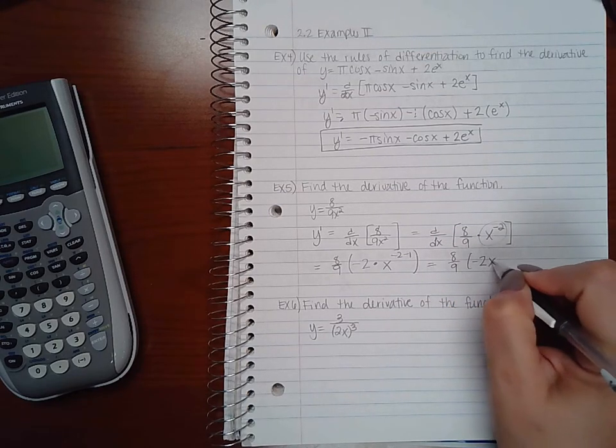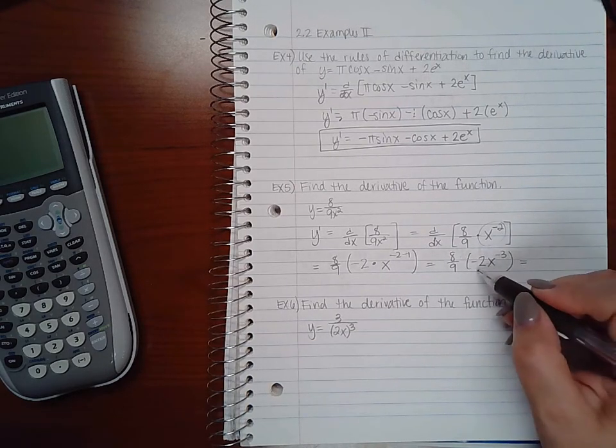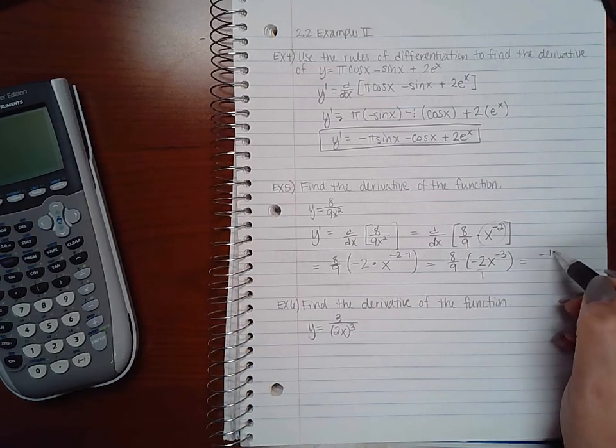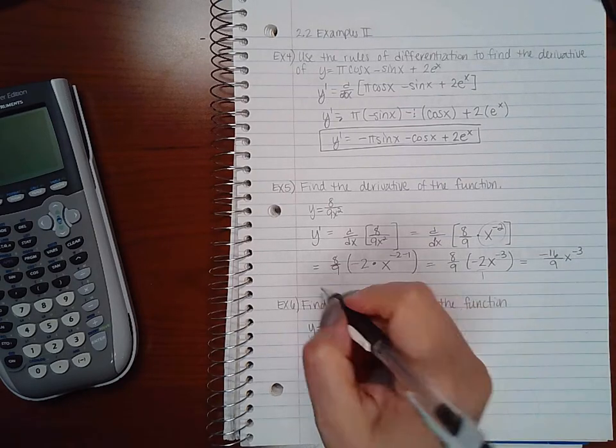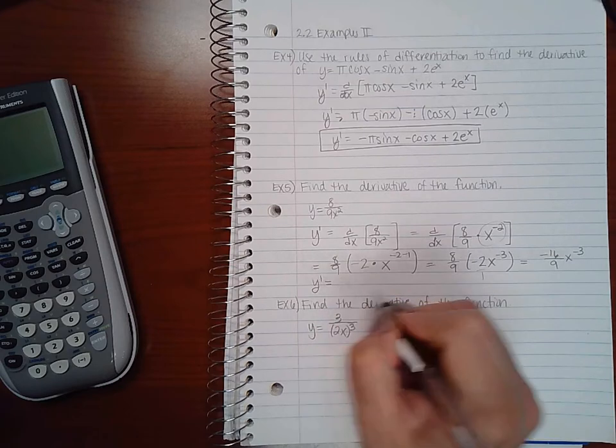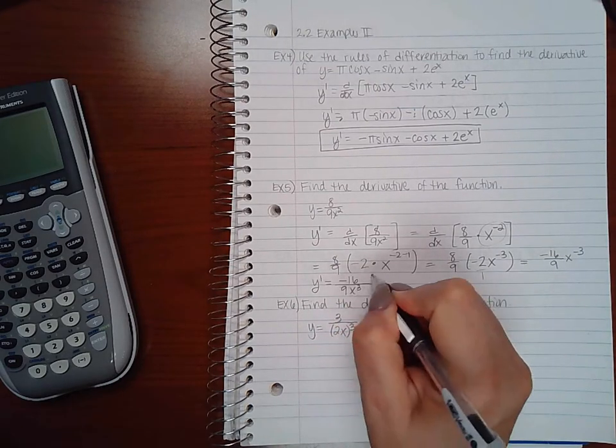So I get -2x^(-3). Which means 8 times -2 is -16 over 9x^(-3). Or I can put that back in the denominator, and I get -16/(9x³).